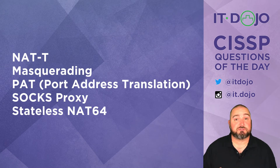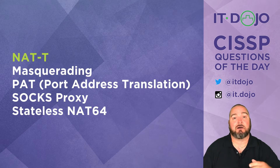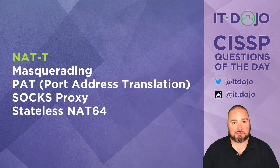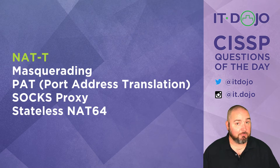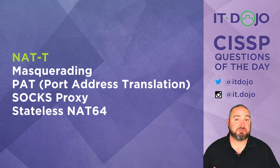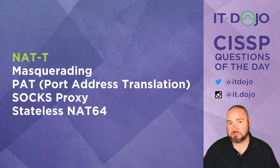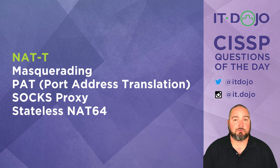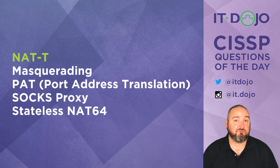The first answer choice is the right choice: NAT-T, or NAT traversal. NAT traversal is a technique that allows you to, in essence, smuggle things through an address translator. If you have a type of traffic that is not translatable — of which there are many — one of the things that you can do is take it and encapsulate it, package it up inside something that is translatable. This is very commonly done with things like VPN traffic.